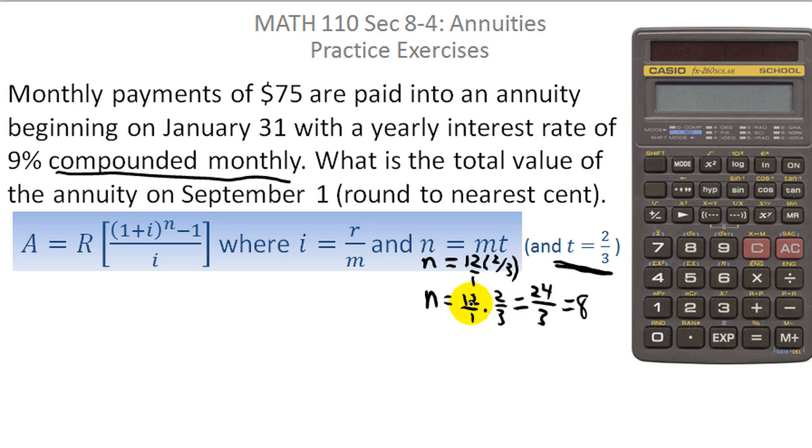Or you could have divided the 3 into the 12 and gotten 4 and 4 times 2 is 8. In any case, what you really realize is that when you counted those 8 monthly payments, you were really figuring out what n was. You didn't have to know that or think about that in advance. But really, when you counted how many monthly payments there were, that's what n represents anyway. So really, you knew that from the beginning. We also need to know i.